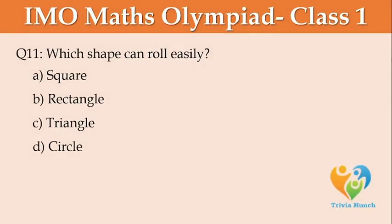Which shape can roll easily? A: square, B: rectangle, C: triangle, D: circle.